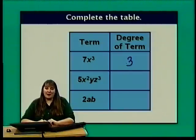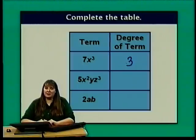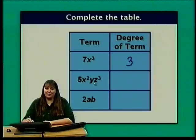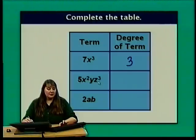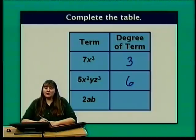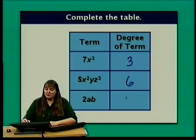For 5x squared y z cubed, we have three variables x, y, and z, so we need to add up the exponents. x has an exponent of 2, y has an implied exponent of 1, and z has an exponent of 3. 2 plus 1 plus 3 is 6, so this term has a degree of 6. 2ab has a degree of 2, since the implied exponents of 1 on both a and b add together to 2.